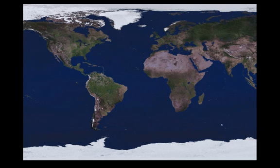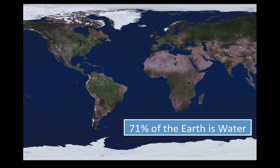This picture shows our world — it's a flat picture of our world. Our earth is round, but the picture helps us understand that most of the surface of the earth is water. 71% of the earth's surface is made up of water, and the rest is land, just like what we live on now.